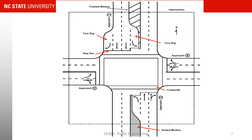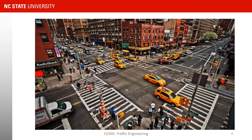On this figure you can also see the stop bar, turn bays, pedestrian crossings, medians, and other features at an intersection. I would like for you to take a look at this figure and think about things that make the analysis of this intersection challenging — things that create complications in analyzing what is going on at this intersection.